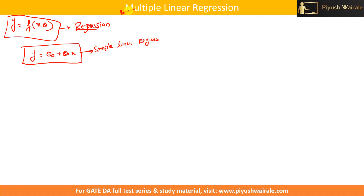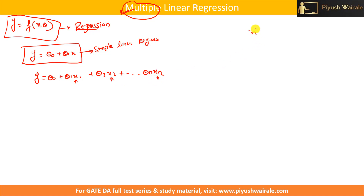What about multiple linear regression? In this case, we have y equals to theta 0 plus theta 1 x1 plus theta 2 x2 plus till theta n xn. This is what multiple linear regression is — we have multiple independent variables. The only difference between simple and multiple linear regression is that we have multiple independent variables x1, x2 till xn, whereas in simple linear regression we have only one variable, x.